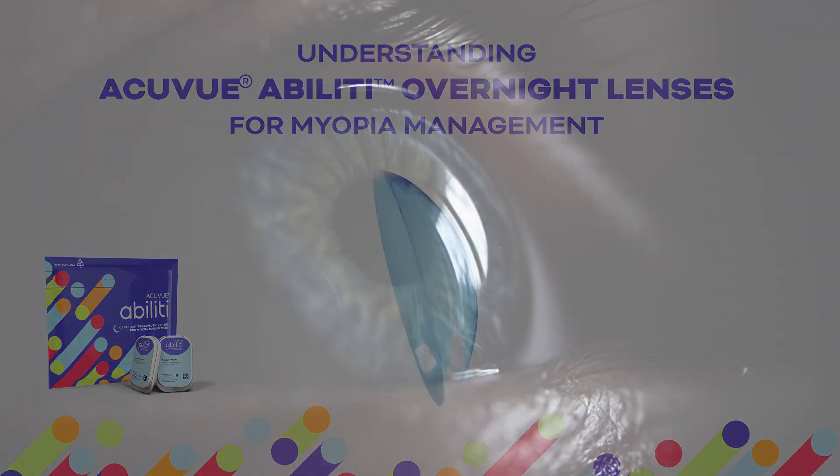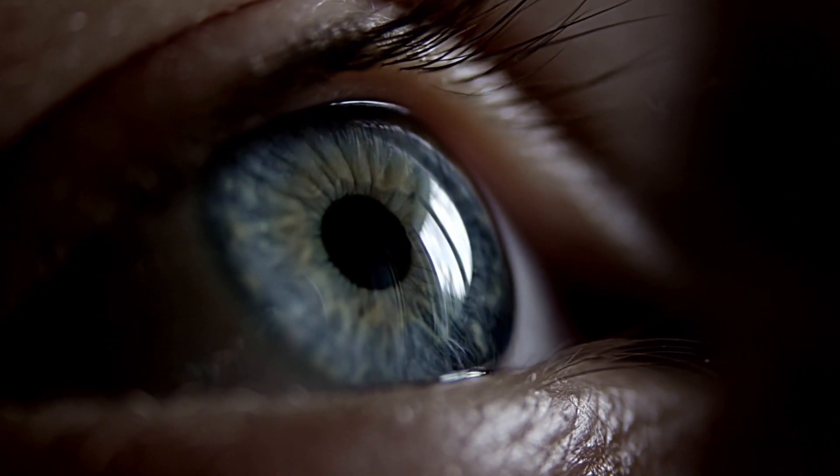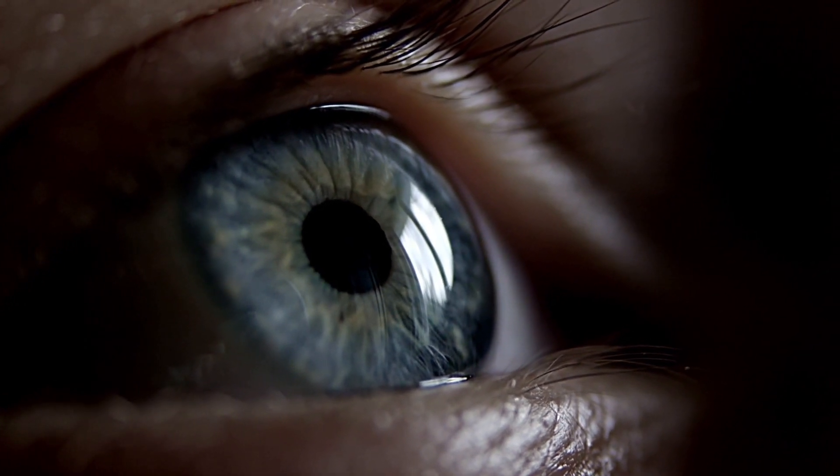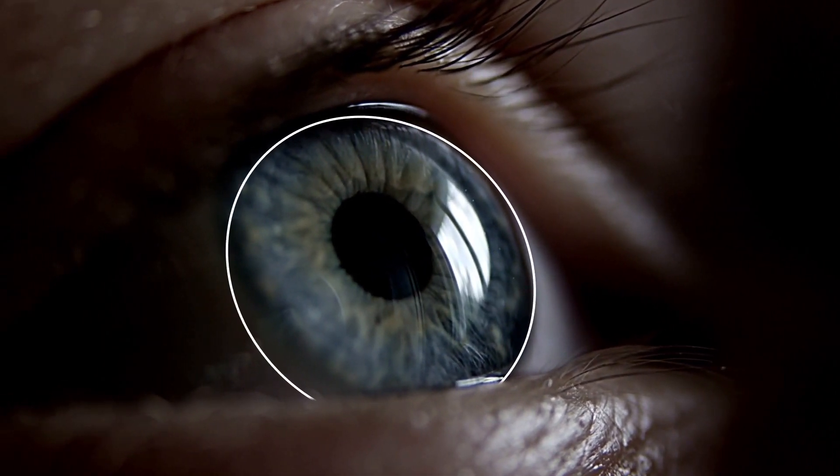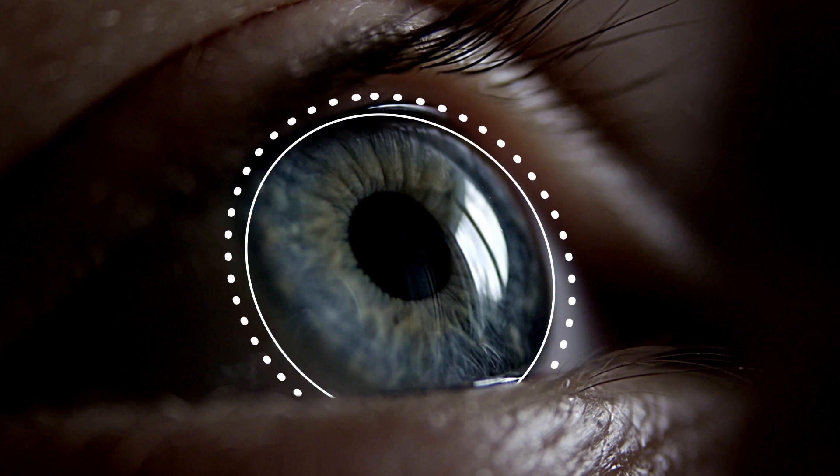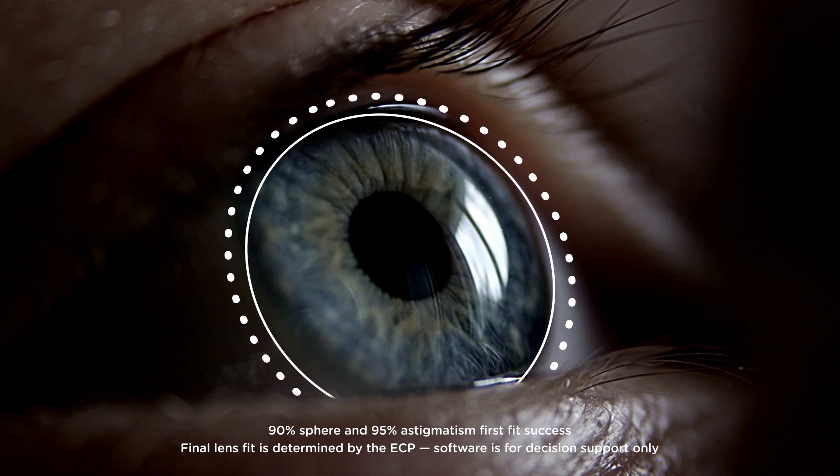The Ability Overnight Lens is an orthokeratology lens specially designed for a patient's corneal shape, size, and prescription using the first-of-its-kind FitAbility experiential fitting software to allow eye care professionals to provide a first fit success rate of about 90% or higher.